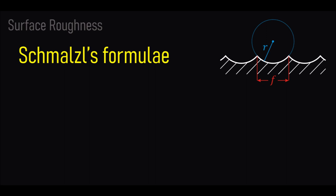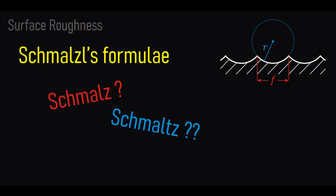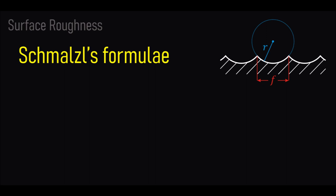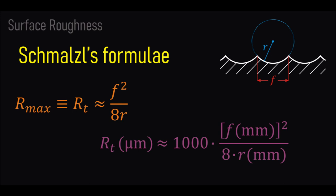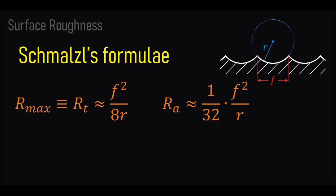Written in many engineering handbooks or taught at college level courses are the mysterious Schmales formulae. You may often find the name Schmales spelled in a different way, and that is another hint about the mystery surrounding those formulae. The Schmales formulae are meant to provide a good approximation of the surface roughness parameters in case of a machine surface. The first formula is the one for the maximum roughness R_max, or R_t, and says it is approximately equal to the feed rate squared over 8 times the radius. It is usually expressed with an extra factor of 1000, since the roughness parameters are usually expressed in micrometers, whereas the feed rate and radius are usually expressed in millimeters.